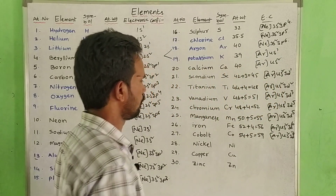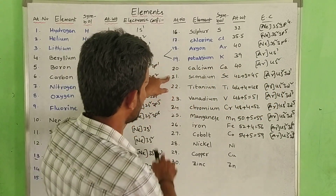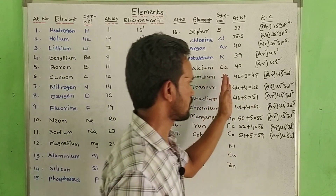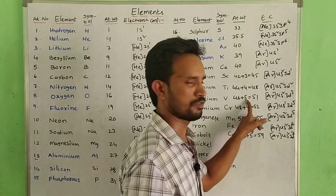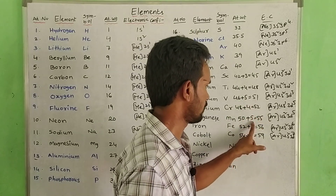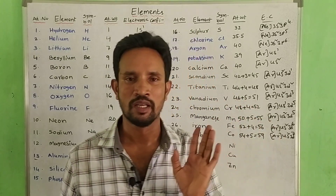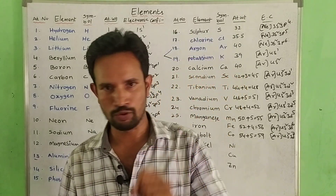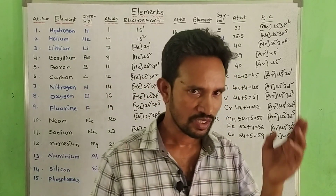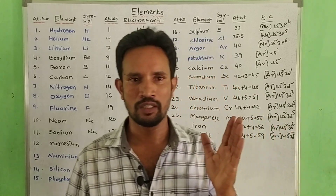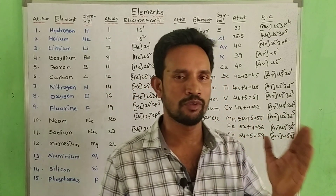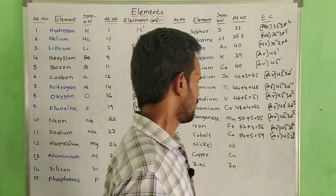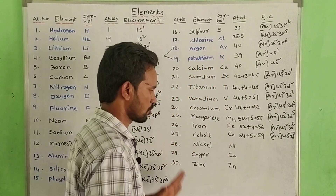For elements 21 to 27, seven elements: add 3, 4, 5 to the base for the first three elements, then add 4, 5 for the next, then 5 for the remaining. Atomic weights from 21 to 23 follow a pattern of adding 3, 4, 5. The remaining elements up to 27 reach atomic weight 59.